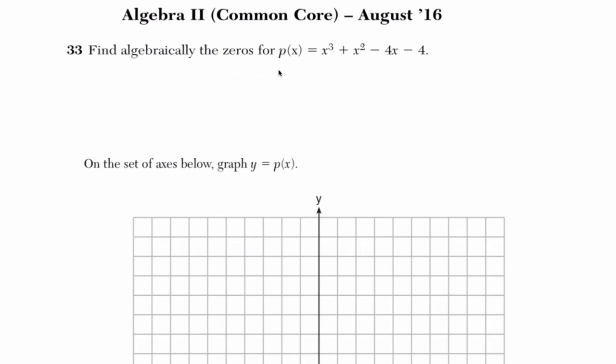Alright, so they want us to find algebraically the zeros for p(x) equals x cubed plus x squared minus four x minus four, and then graph it.